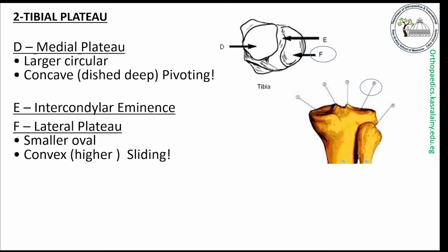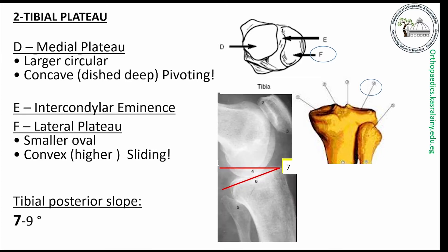Whereas the lateral plateau is more or less convex to flat and smaller, oval in shape, for the sliding motion of the lateral femoral condyle. The orientation of the tibial plateau with the shaft has a posteriorly directed slope of 7 to 9 degrees.